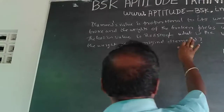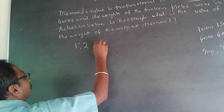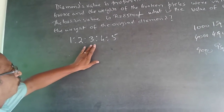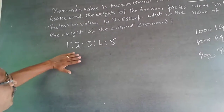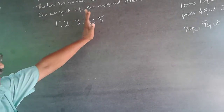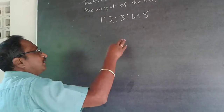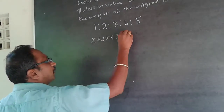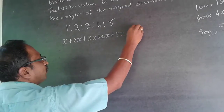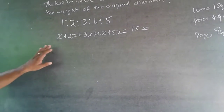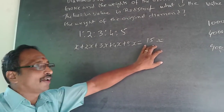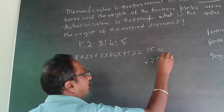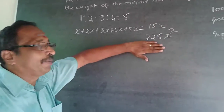Our diamond is broken into 5 pieces in the ratio 1:2:3:4:5. I introduce a constant factor x to maintain the ratio, making the pieces x, 2x, 3x, 4x, and 5x. So the original weight is x + 2x + 3x + 4x + 5x = 15x. Because value is proportional to weight squared, the original square weight is (15x)² = 225x².